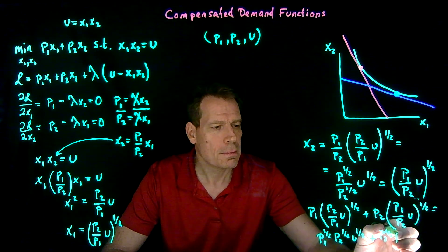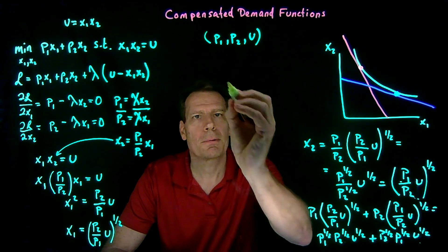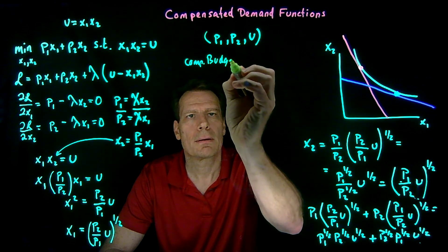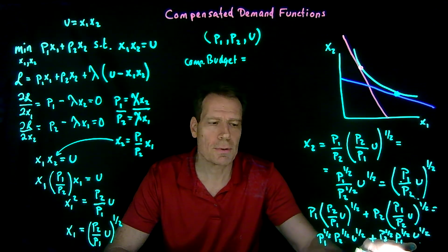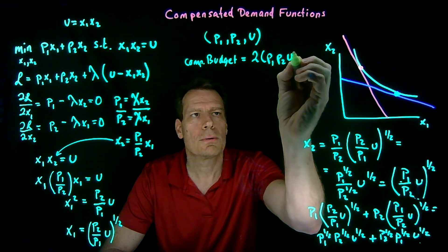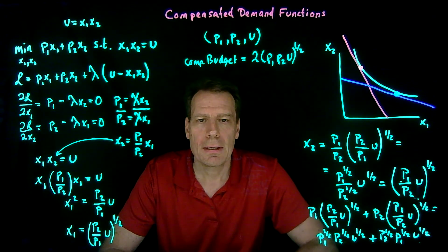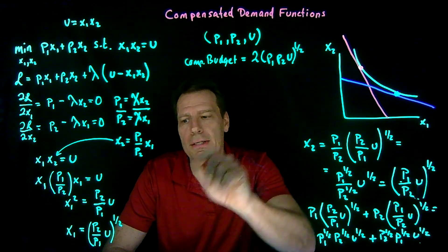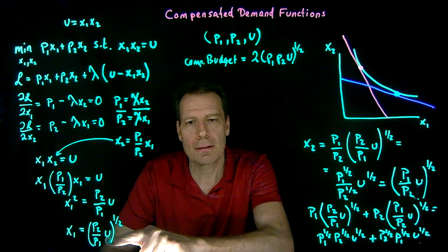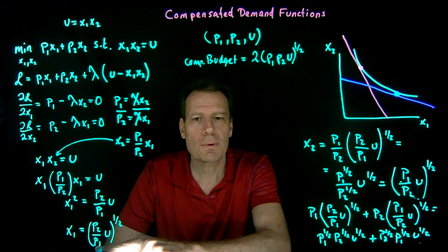So the compensated budget is just equal to those two terms summed together — they're the same term, so it's just 2·(p1·p2·u)^(1/2). And that's how you calculate a compensated demand function. The compensated demand curve is then just an inverse slice of these functions — a slice that holds the price of the other good and the indifference curve fixed, and just tells us how much we're going to buy of the good as its price changes while we always stay on the same indifference curve.